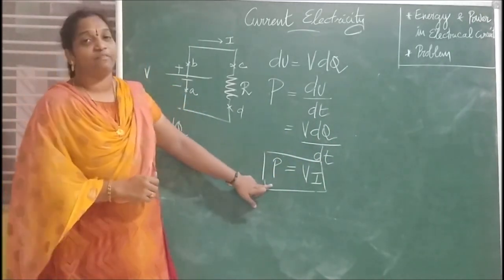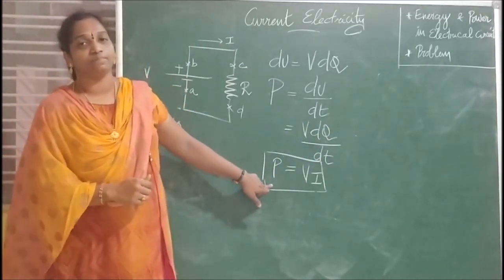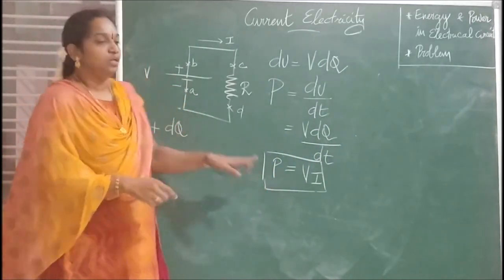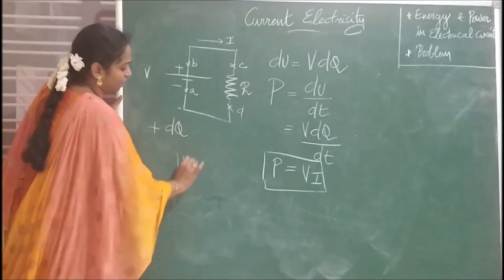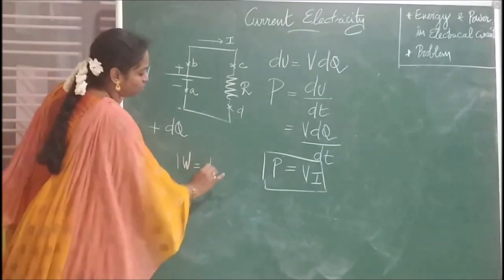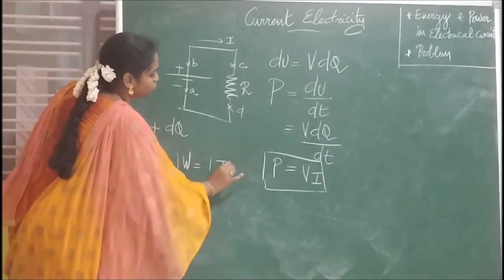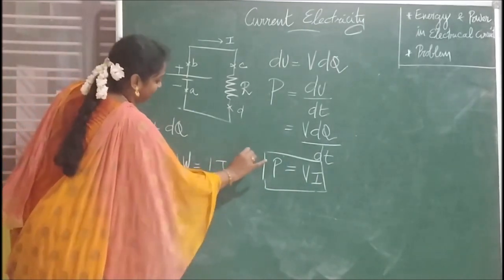So we have derived the power equation. Power P equals VI, where V is the potential difference across a component and I is the current which flows through it. The unit of power is the watt. One watt is equal to one joule per second.